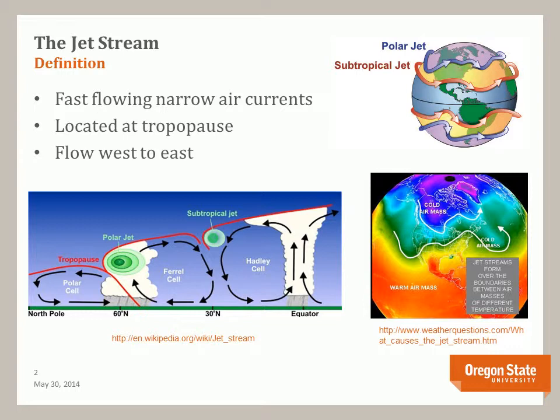The globe on the lower right illustrates further the location of jet streams between air masses. The cross section to the left shows a detailed look at the jet stream locations. Note the location between the different atmospheric cells, the changes in the height of the troposphere as you move towards the poles, the tubular shape of the jet streams with high winds at the core, and the correlation between the jet streams in the areas of unstable rising air.